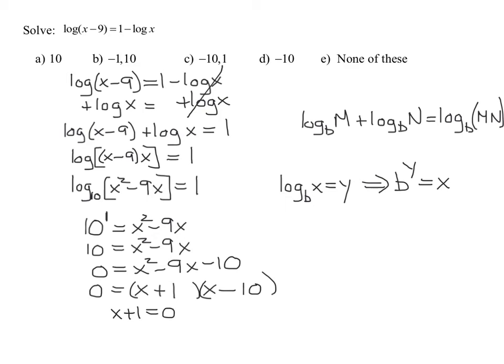Set each of them equal to 0. So if x plus 1 is 0, subtract 1 from both sides, you get x equals negative 1. If x minus 10 is 0, you get x equals 10.